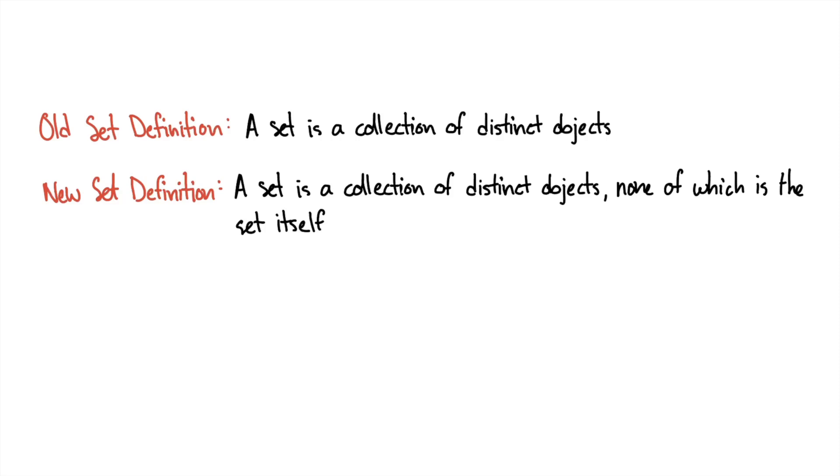In this video, I'm going to explain Russell's paradox and why it forced mathematicians to change the definition of a set. So the old definition of a set is a set is a collection of distinct objects. And the new set definition is the same thing, but it adds that a set cannot contain an element of itself.